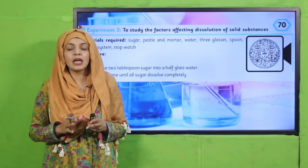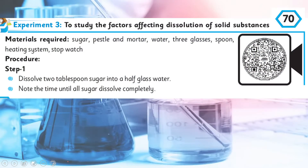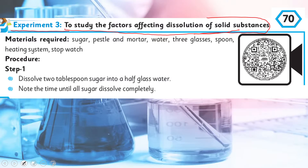I hope everybody has opened the books. Now let's look at the instructions of the experiment. Experiment 3: to study the factors affecting dissolution of solid substances. The way of making a solution can be affected, and we can increase dissolving. The materials required are: sugar, pestle and mortar, water, three glasses, a spoon, a heating system, and a stopwatch.